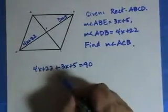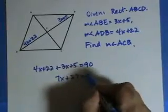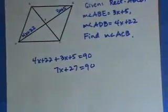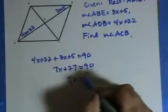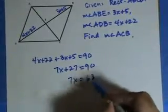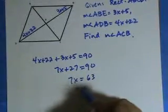So that makes 7x plus 27 equals 90. 7x equals 63. x equals 9.